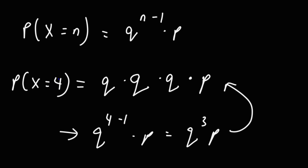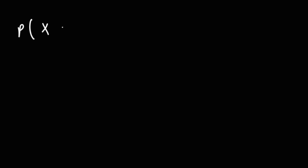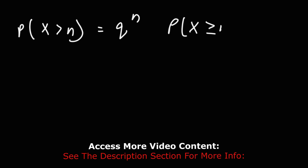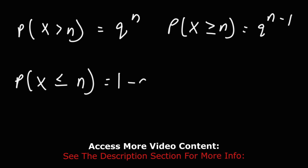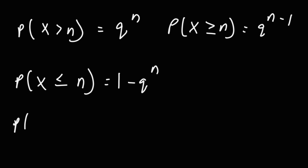This is the formula for finding the probability of a geometric distribution. There are more formulas associated with this: the probability that x is greater than n is equal to Q raised to the n; the probability that x is greater than or equal to n is Q raised to the n minus 1; the probability that x is less than or equal to n is 1 minus Q raised to the n; and the probability that x is less than n is 1 minus Q raised to the n minus 1.